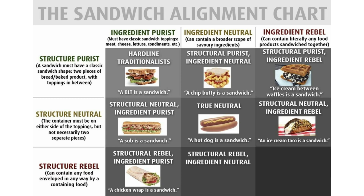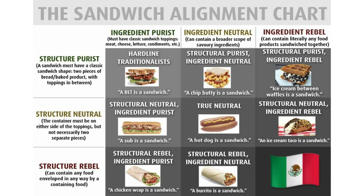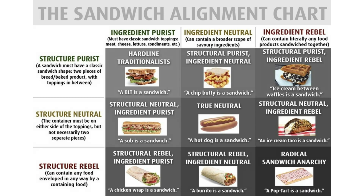Structural rebel, ingredient neutral — a burrito is a sandwich. Wraps and burritos are basically the same thing, but burritos are more Mexican. A radical sandwich anarchist, where the ingredients are sweet and untraditional and the structure is non-traditional.